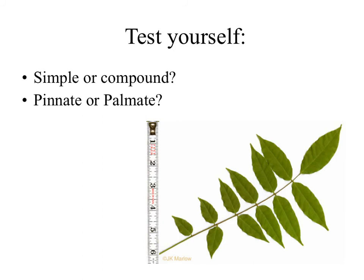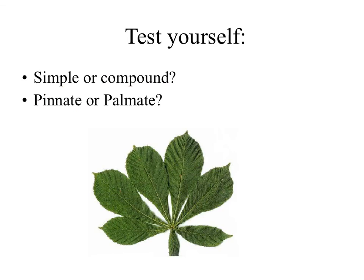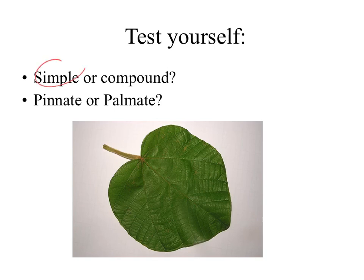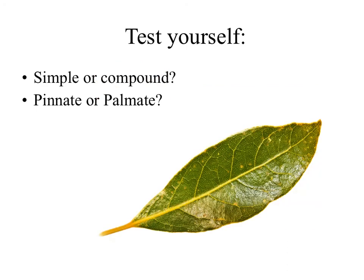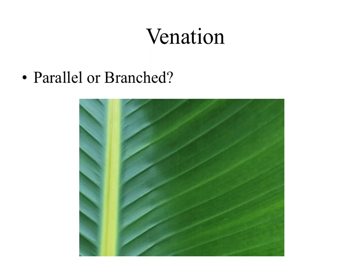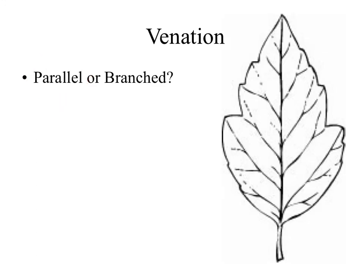Take a look at this one — would this be simple or compound? Compound. Pinnate or palmate? Palmate connects at one point, pinnate along it — so this one is pinnate. What about this one? Compound and palmate because it connects at one point. What about this one? Simple — and if it's simple, you can't say pinnate or palmate; that's only for compound. How about this one? Compound, palmate. How about this one? Simple. Now look at the venation — do you see how this kind of looks like a feather? It's parallel — the veins don't run into each other. Branched looks like a tree, so you can see the veins actually run into each other.